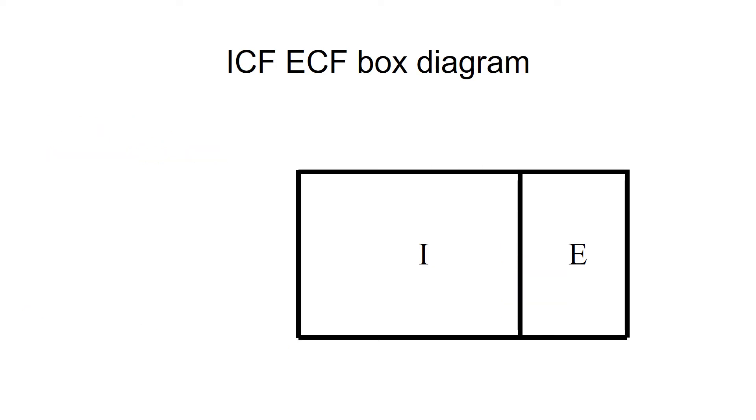To recap, in a box diagram the horizontal axis represents the volume starting from the zero point in the midline, and the vertical axis represents the osmolarity. The line between I and E would be the cell membrane.